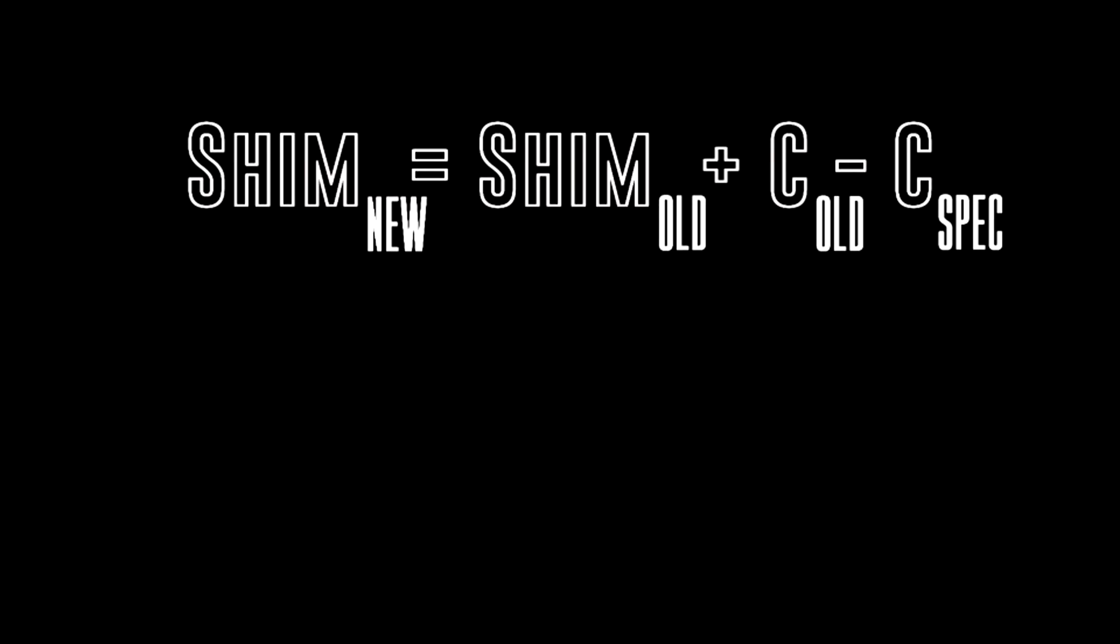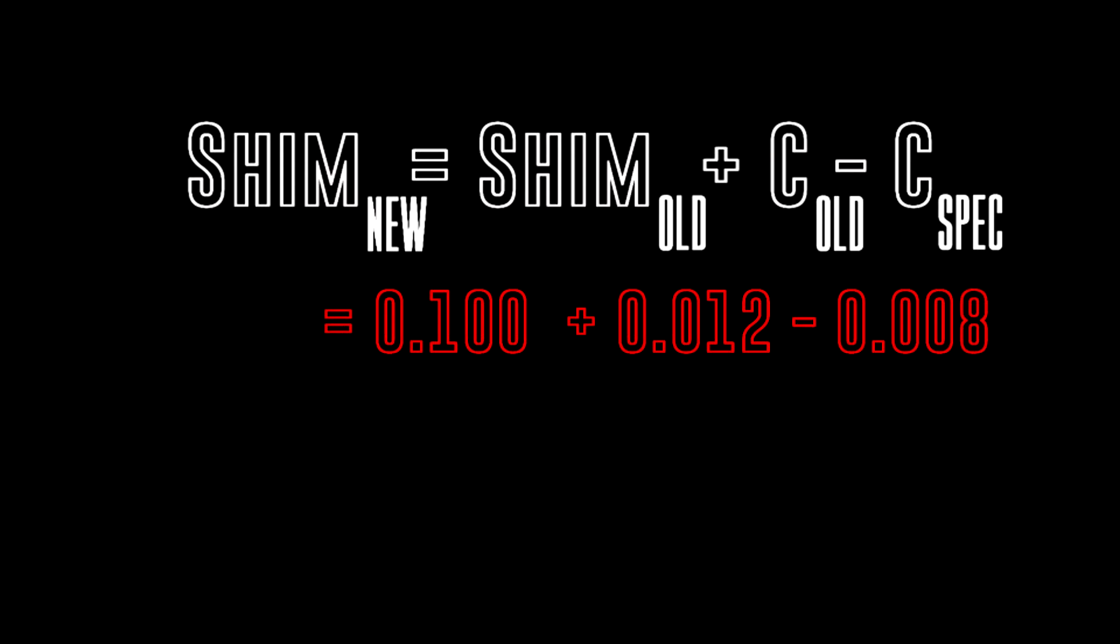Now to determine the new shim required, you need to take the 100 thou plus the 12 thou, and then subtract off the 8 thou to determine the new shim size required. In this case, it would be 104 thou.